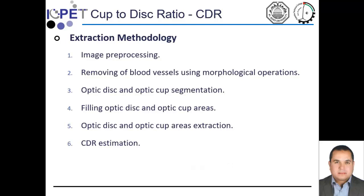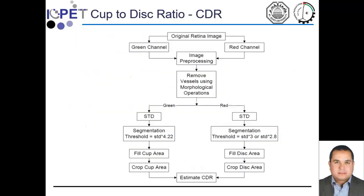We will use these steps to extract the cup-to-disc ratio, as explained in this diagram. First, we consider the red channel for extracting the disc area and the green channel for extracting the cup area, because the disc area is clearer in the red channel and the cup area is clearer in the green channel. We then remove noise in the pre-processing step, followed by removing blood vessels using morphological operations, and then threshold the output using two different threshold values for the red and green channels.